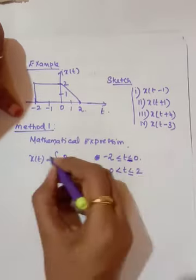We can verify: at t = 0, we get 2; at t = 1, we get -1 + 2 = 1; at t = 2, we get 0. So the expression is correct. Therefore, x(t) = 2 for -2 ≤ t ≤ 0, and x(t) = -t + 2 for 0 < t ≤ 2. Since real-time signals are delayed and we cannot advance them in practice, we focus on the positive side.